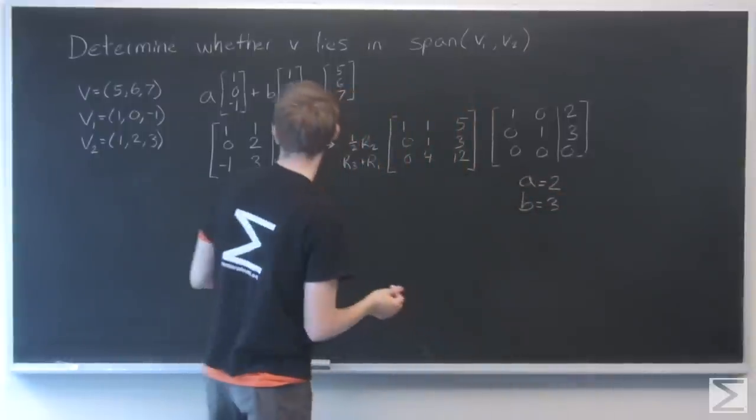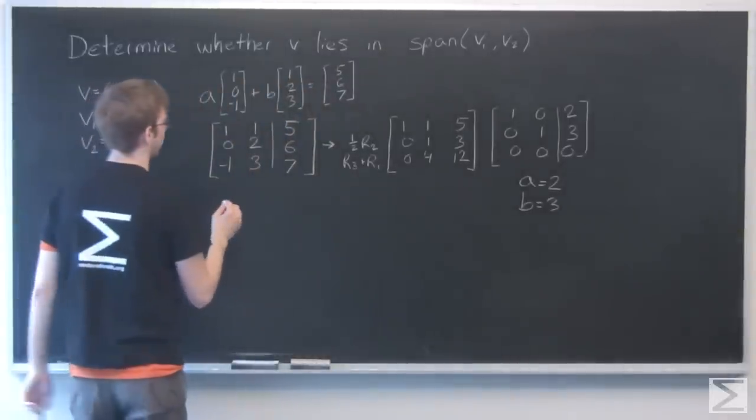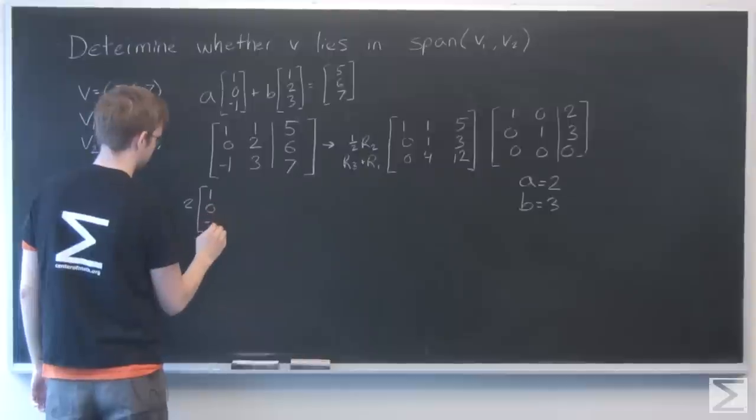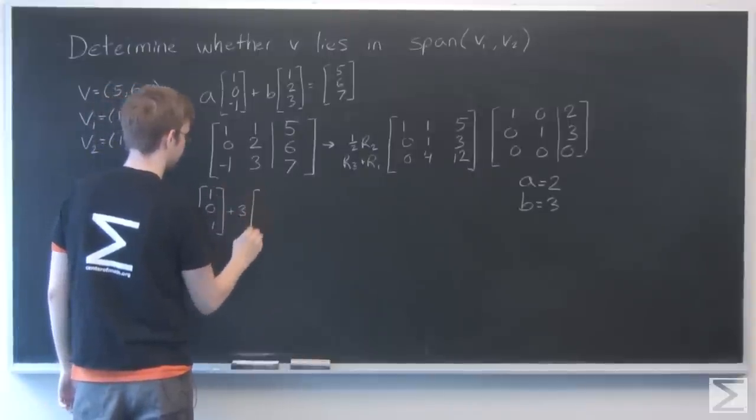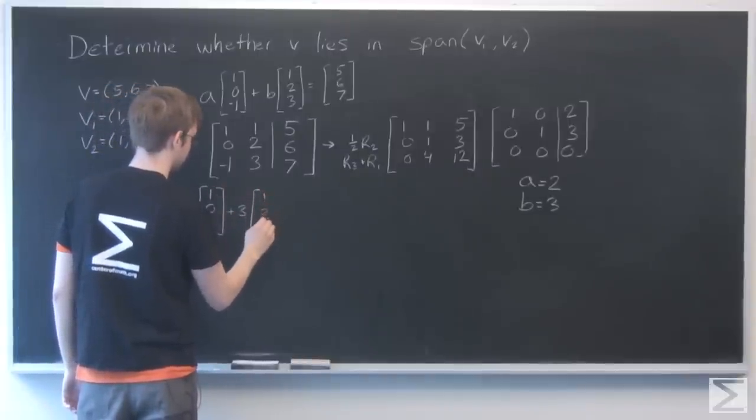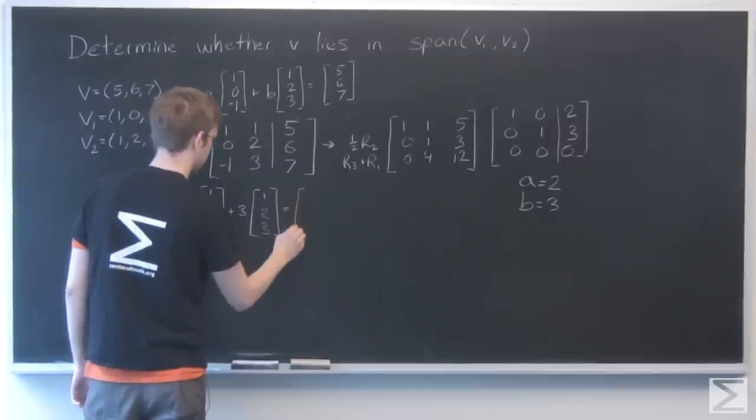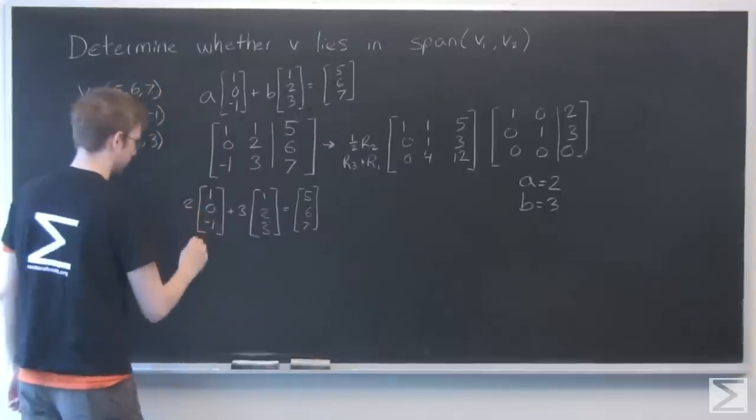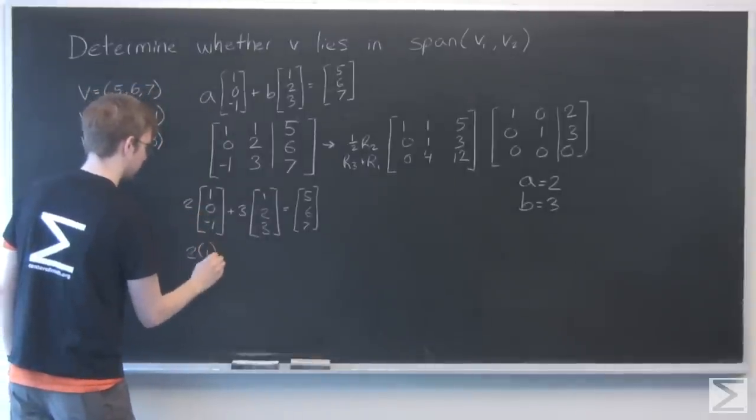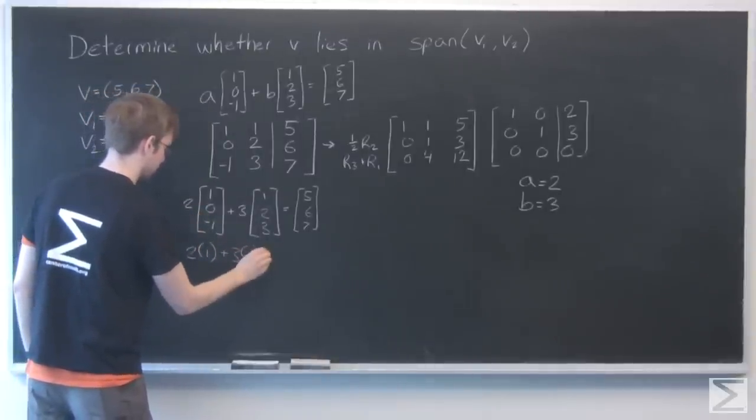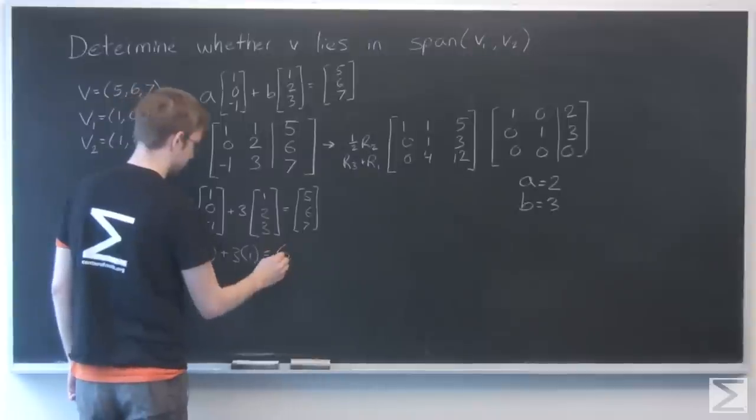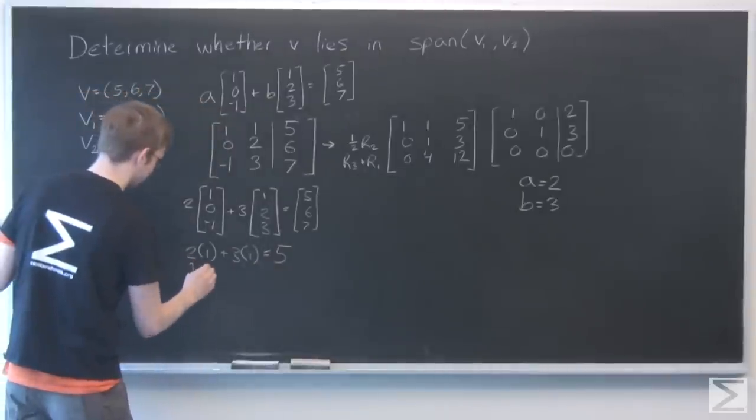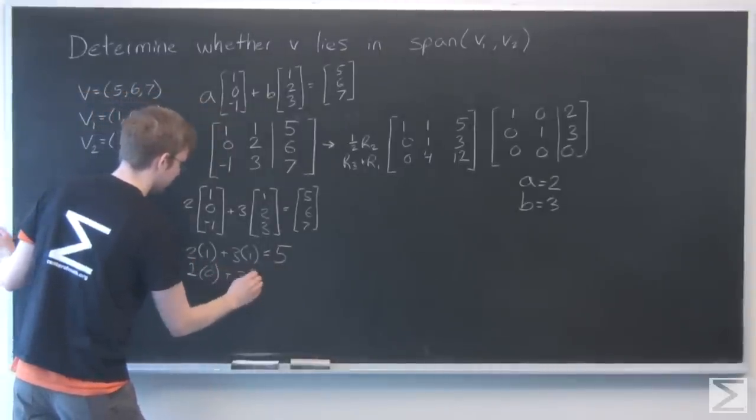Let's just make sure that works. Going back to here, 2 times 1 plus 3 times 1, that is indeed 5.